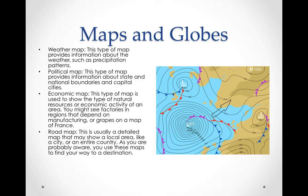Road maps are usually detailed maps that may show a local area, like a city or an entire country, and are used to help you find your destination. Today, with GPS, we don't think much about road maps anymore, but I used them frequently when I was young.